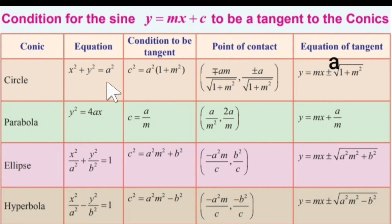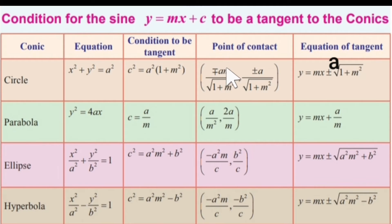A tangent touches the curve exactly at one point, which is called the point of contact. To find the point of contact of the tangent for the circle, the general form is: minus or plus a m by root of 1 plus m square, plus or minus a by root of 1 plus m square.